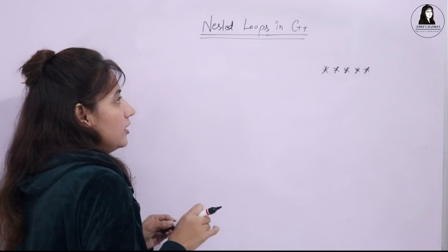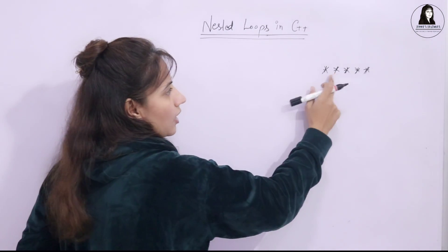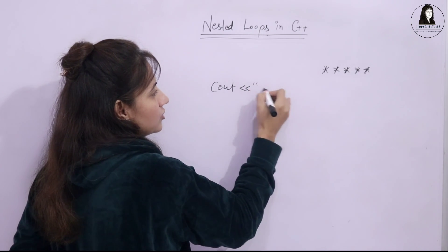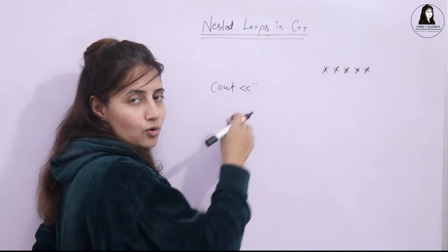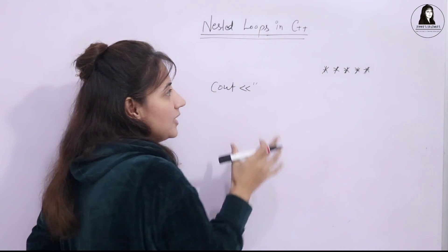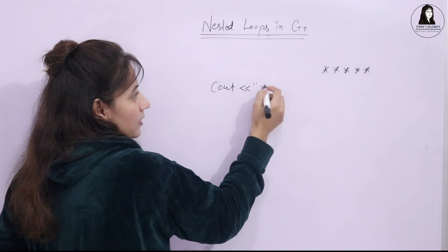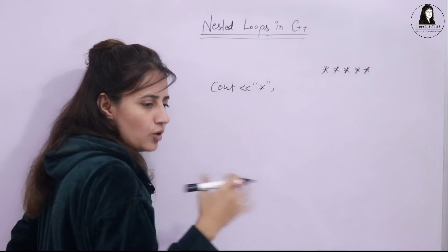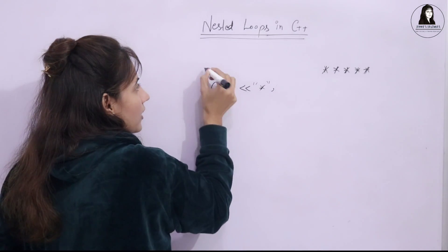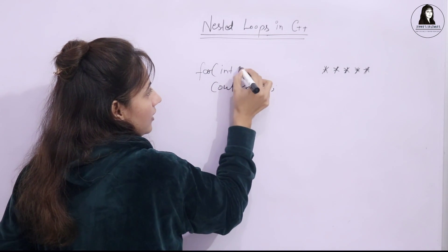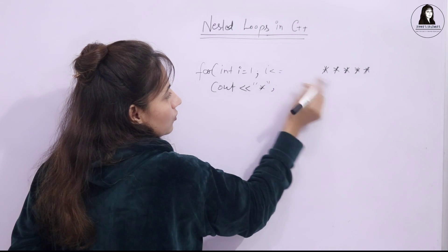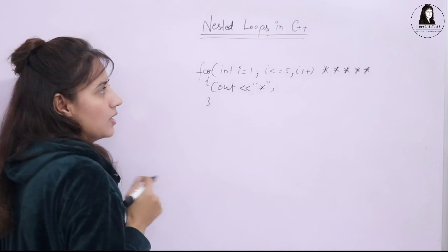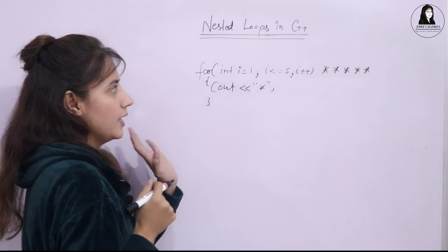Let's take a simple example. If you want to print 5 stars in a row, you could write 5 separate cout statements, but that is not a good idea — we are repeating the same thing. So if you are repeating something, we use loops. We can write a for loop: i = 1, i <= 5, i++, and within it print a star. This will print 5 stars.